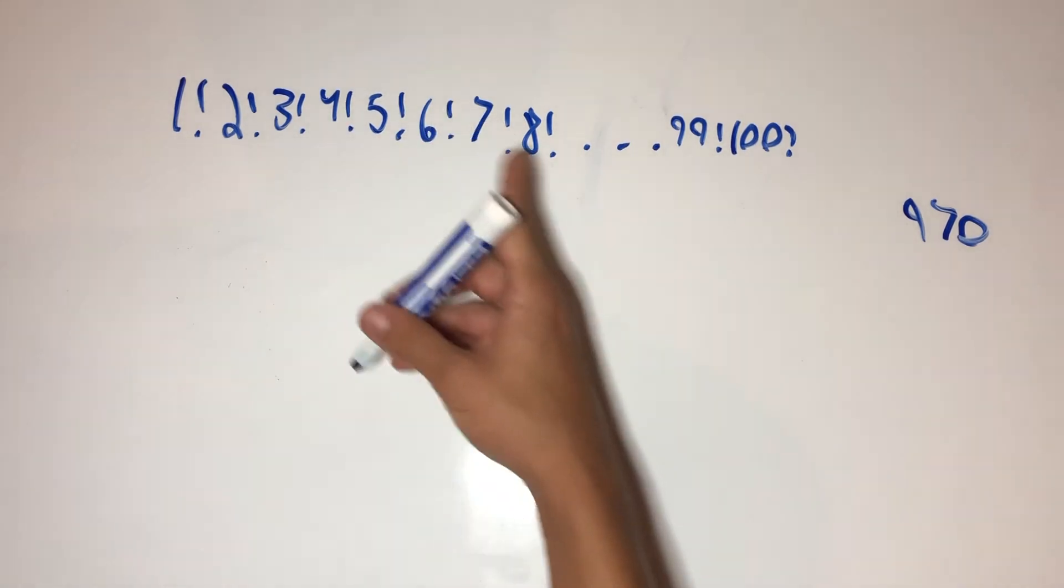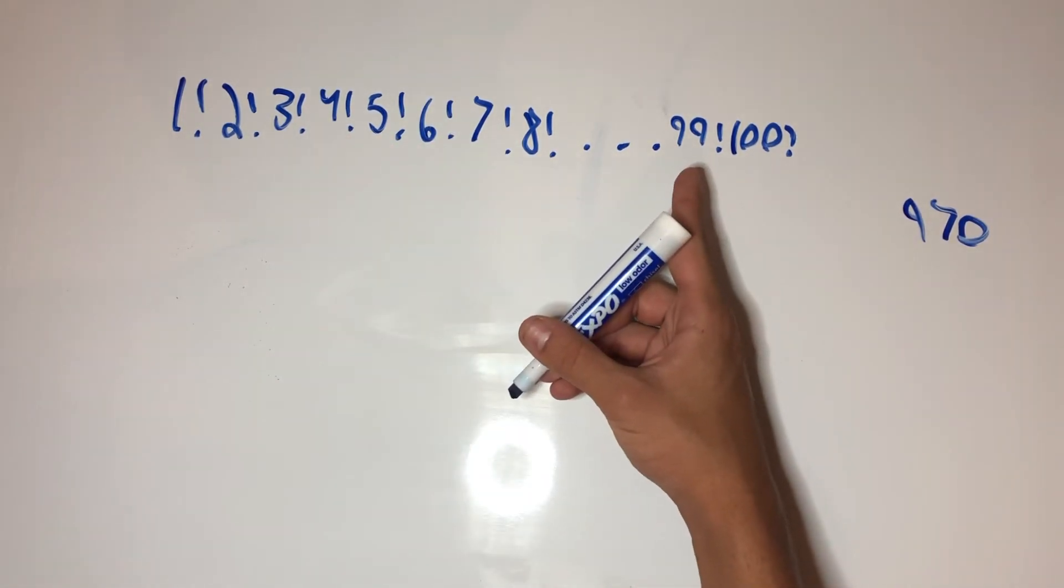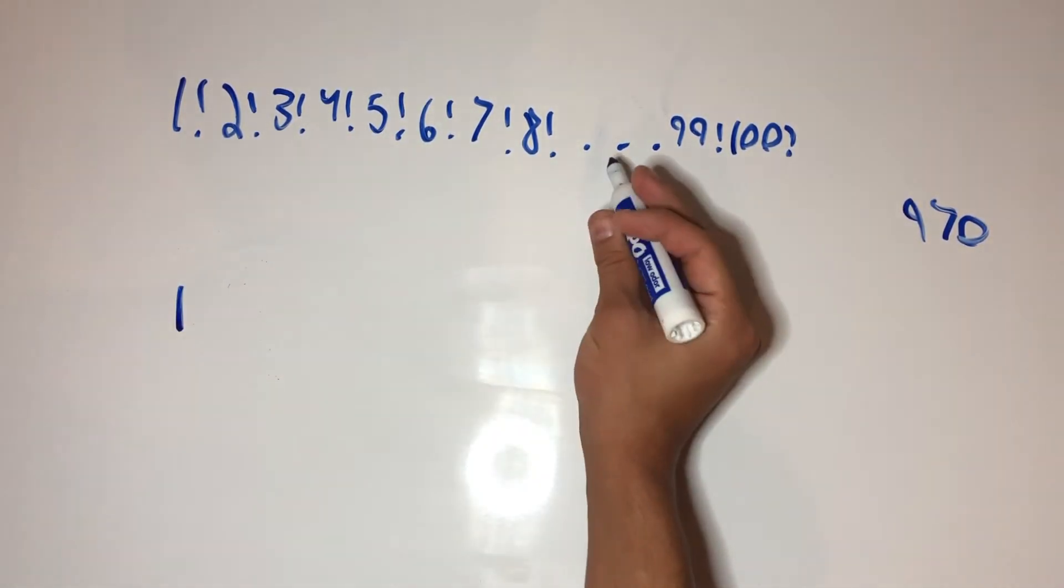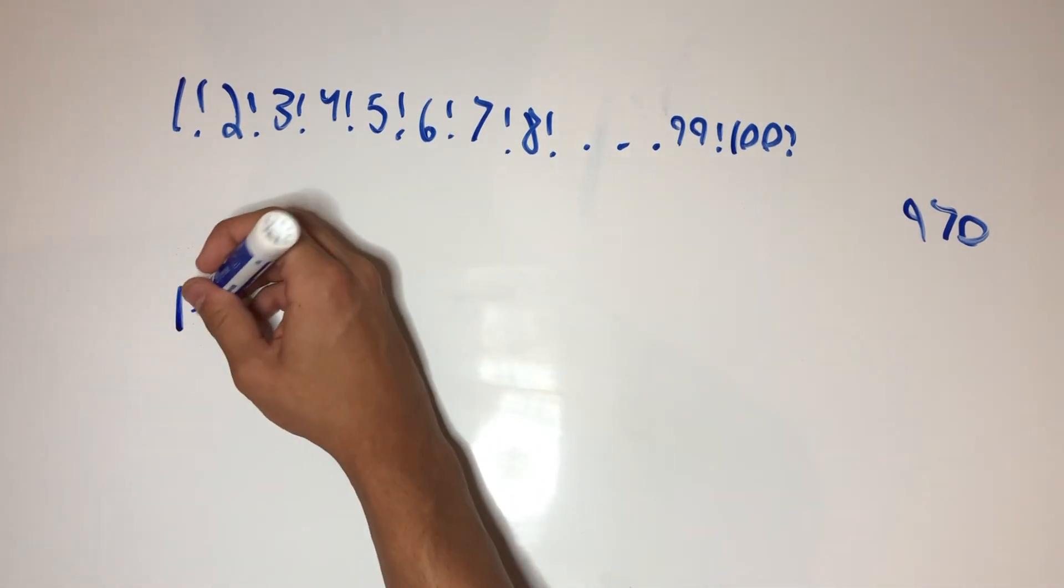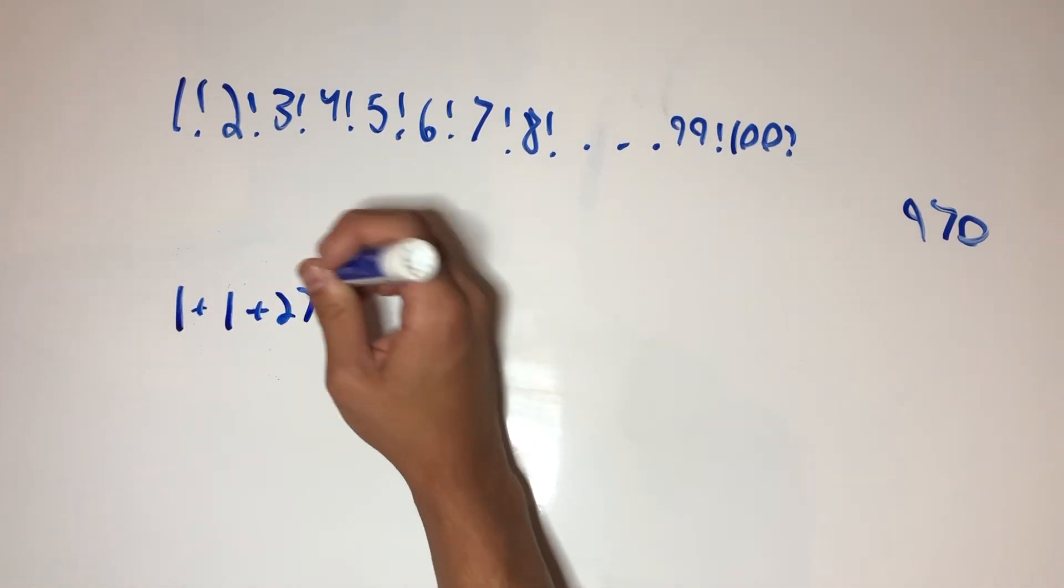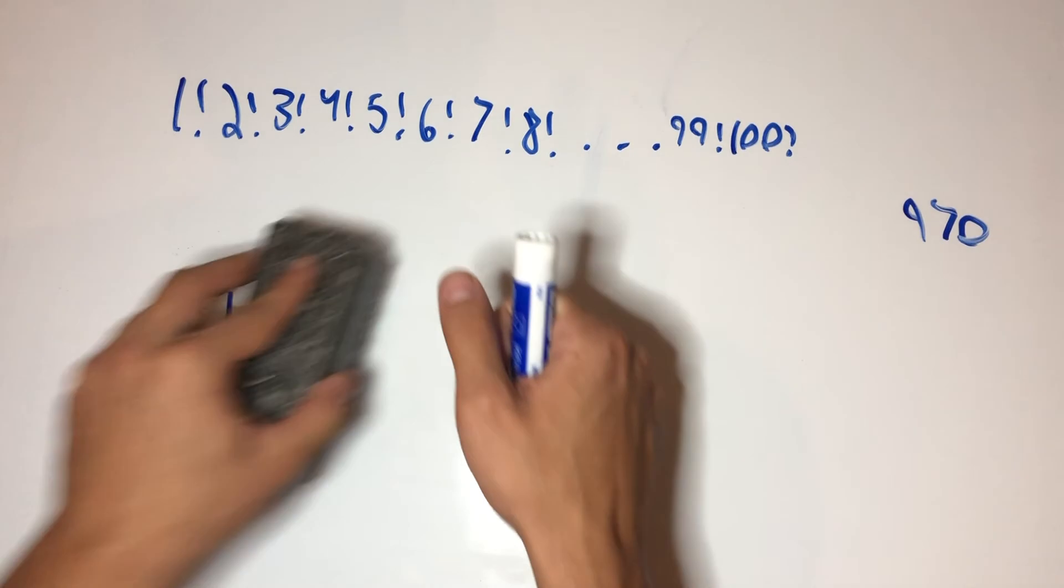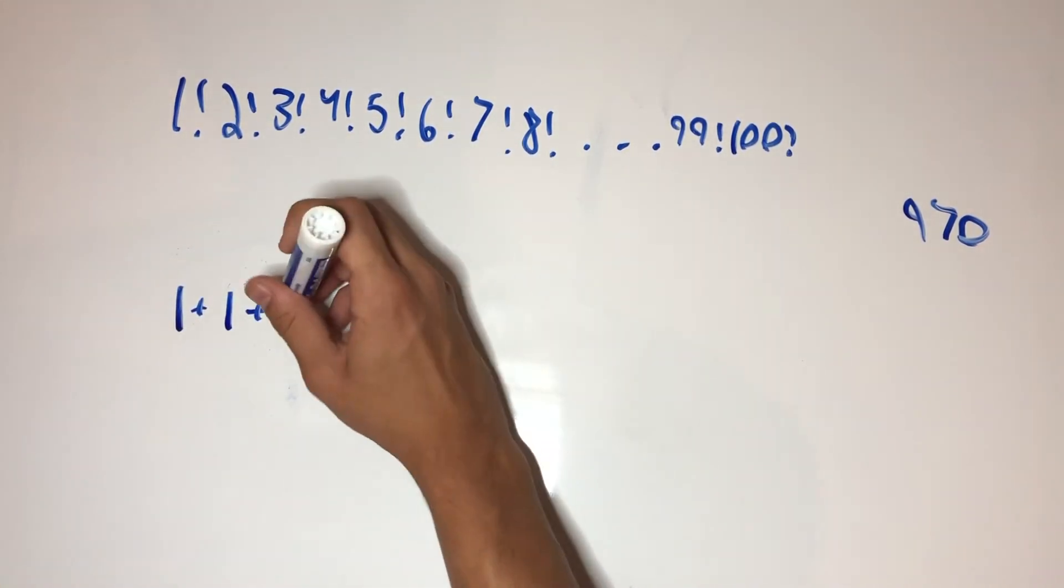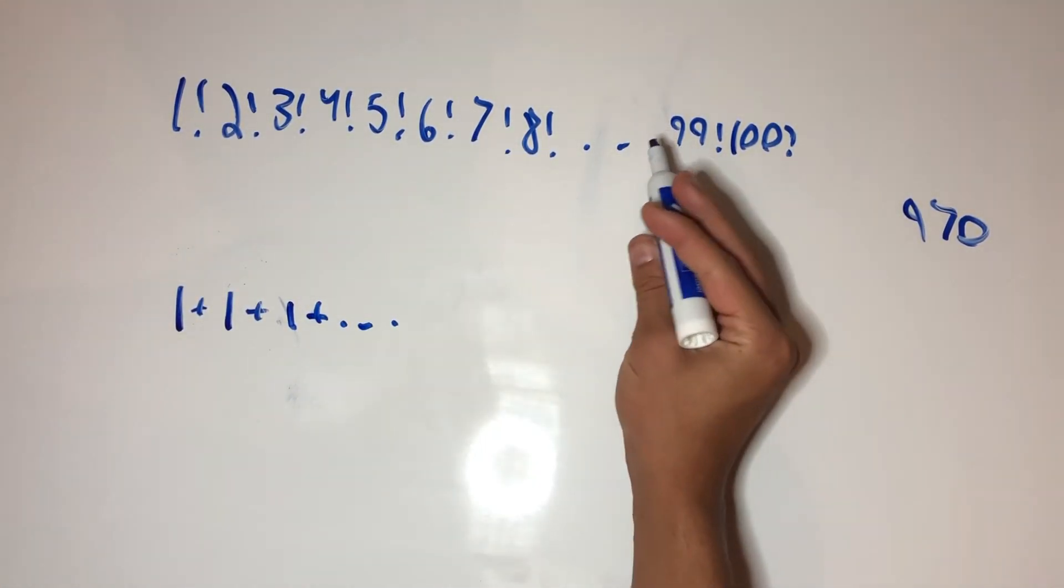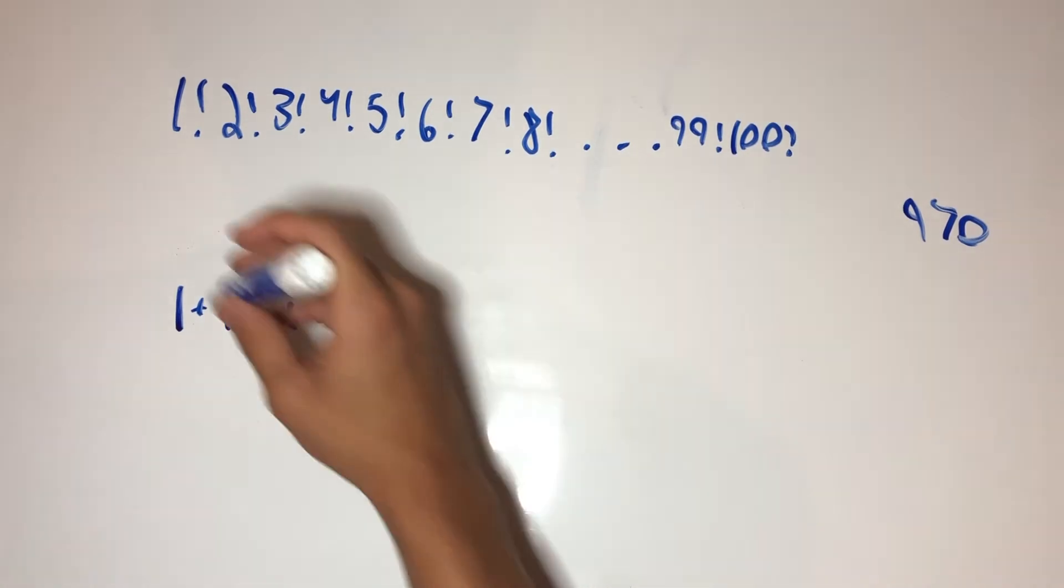So, starting at 25 factorial in this sequence, we will have one extra. Okay? And then 26 also has a factor of 25, and so is 27. All the way until we get to, sorry, 27. All the way up until we get to 50 in here. Now, there's going to be 25 of these.